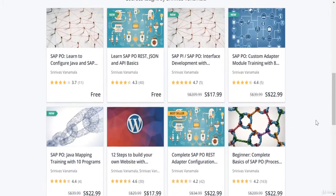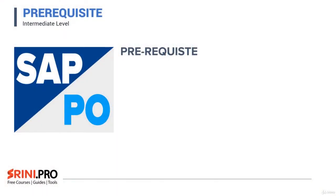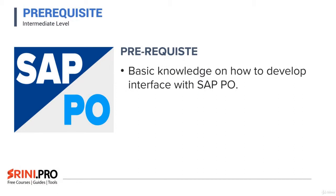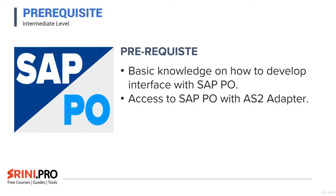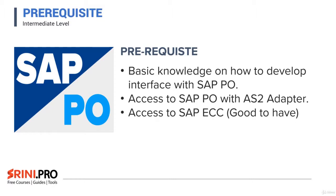Let's look at the prerequisites for this course. You need to have a basic knowledge on how to develop an interface with SAP PO. This course will zoom in on the SAP AS2 adapter, so some knowledge is required on how to develop an interface and how to access the SAP PO tools. You need to have access to an SAP PO system on which the AS2 adapter is installed. Access to an SAP ECC system is good to have, but you can still learn without it. You'll also need internet access to download software like MECH AS2 or EDI Notepad, as shown in this course.